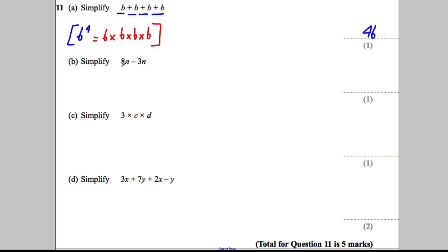Right, next. 8N's subtract 3N's. That's clearly 5N's.